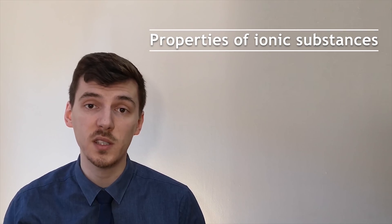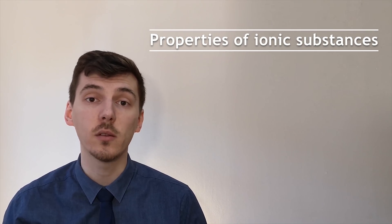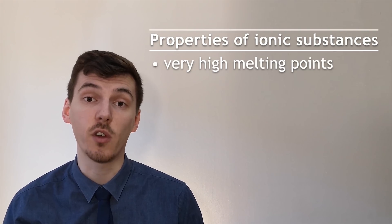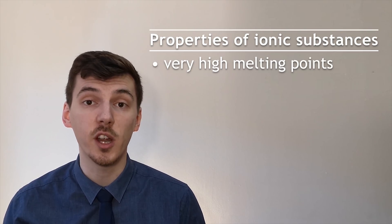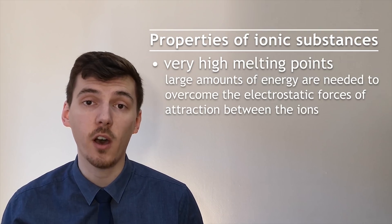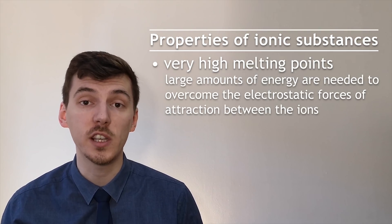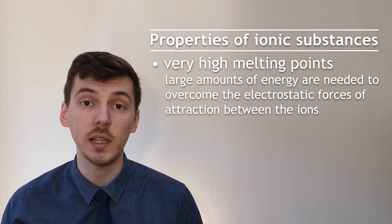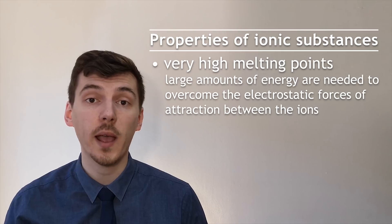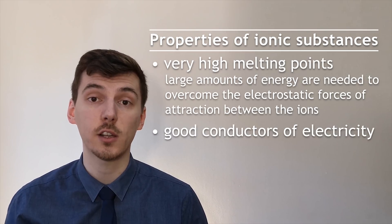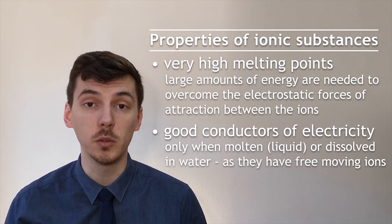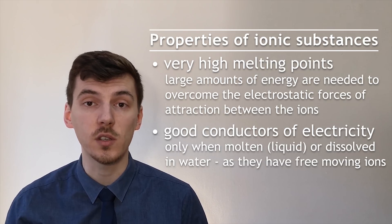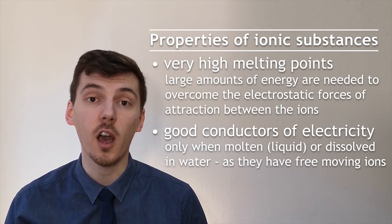These giant ionic structures have two main physical and chemical properties that we can test. Ionic compounds have very high melting points and we can test this by trying to melt them and recording the temperature at which they do melt. These compounds have high melting points because a lot of energy is required to break the electrostatic force of attraction between the ions. Ionic compounds are also very good at conducting electricity but only when they are molten or dissolved in water. When they are solid they do not conduct electricity as there are no free moving ions.